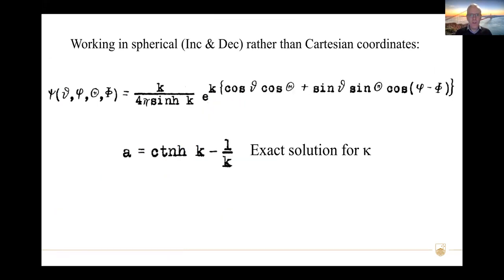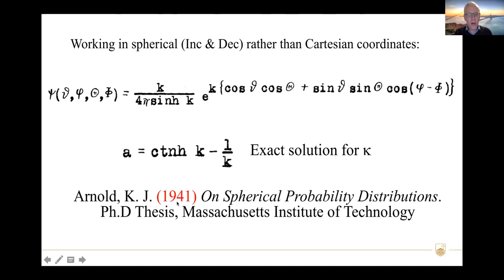We can also work in spherical coordinates — inclination and declination — where kappa is expressed as a function of resultant vector length 'a'. One thing worth noting: these equations come from the PhD thesis of Arnold (1941) on spherical probability distributions from MIT. So Fisher did not actually discover the Fisher distribution — Arnold discovered it in 1941. For continuity, I will refer to it as the Fisher distribution for the remainder of the talk.